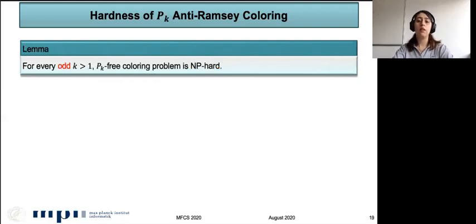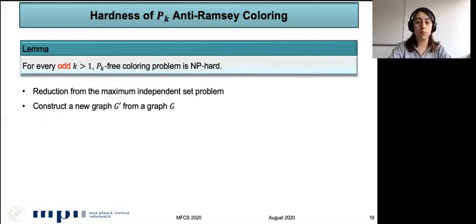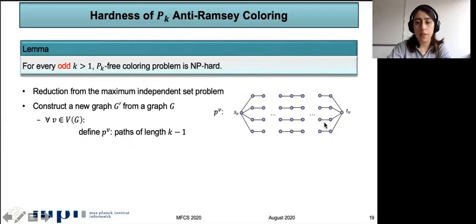Let me start with odd values of K. Our goal is to prove that finding the size of the maximum independent set in G is equivalent to finding the anti-Ramsey number of G' and P_k. We construct a new graph G' from G such that knowing the anti-Ramsey number of G' lets us determine the maximum independent set size in G. For each vertex V in V(G), we define a gadget P_V: we place two vertices S_V and T_V and add many paths of length K−1 between them. We introduce this gadget for each vertex V and add it to G'.